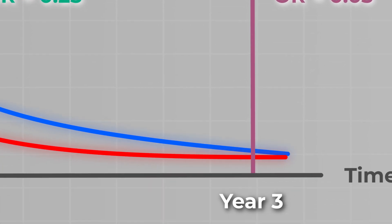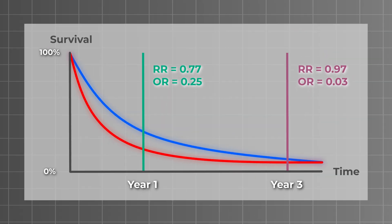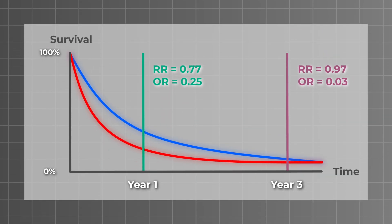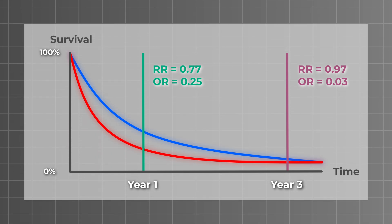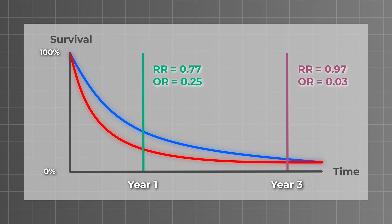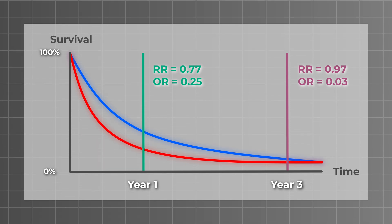To illustrate this, consider these plots, which show the percentage of patients surviving in the exposure group in blue and those in our control group in red. For the sake of simplicity, let's assume that the hazard in both groups is constant over time.